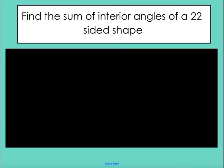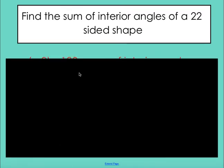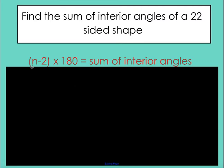Okay, let's use this formula to solve problems now. This is our first question: find the sum of interior angles of a 22-sided shape, so a polygon that has 22 sides. Now the first thing you want to do is write down the formula, n minus 2 times 180.